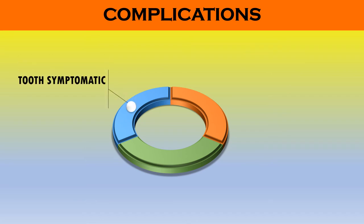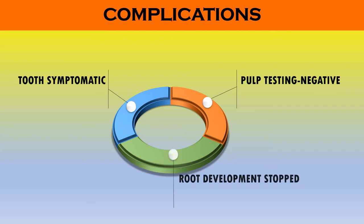Possible complications include the tooth becoming symptomatic — showing pain, tenderness, or mobility. Sometimes the tooth does not become symptomatic but shows a negative response to pulp testing for up to three months. In case of immature teeth, root development may stop. The possible treatment for such teeth is endodontic therapy — root canal — depending upon the stage of root development present.